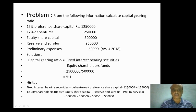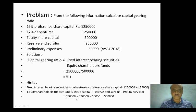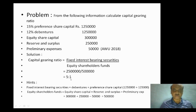Fixed interest bearing securities: debentures plus preference share capital equals 12,50,000 plus 12,50,000 equals 25,00,000. Equity shareholders fund equals equity share capital plus reserve and surplus minus preliminary expenses, that is 30,00,000 plus 2,50,000 minus 50,000 equals 32,00,000. Wait — so the capital gearing ratio is fixed interest bearing securities 5 times equity shareholders fund, giving a ratio of 5 is to 1.